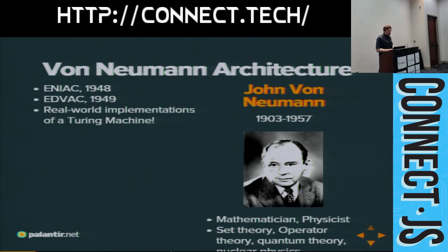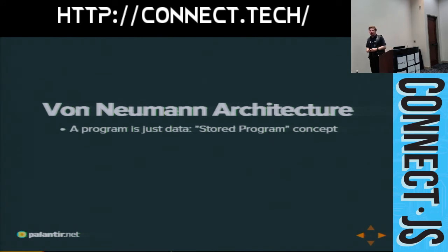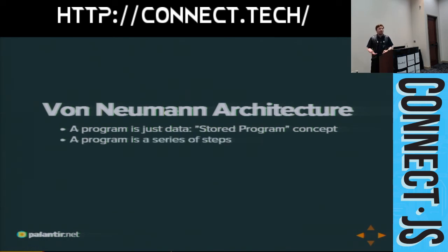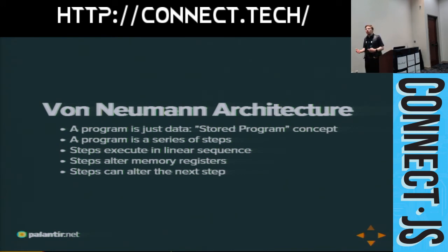But Von Neumann went a step further than programming by screwdriver. He was one of the people — the one who gets credited for it — who developed something called the Von Neumann architecture. The Von Neumann architecture is that you have a stored program: a program is just data. A program is data that you can manipulate, whose job is to manipulate other data. A program is simply a series of steps, a series of instructions followed one after another in linear sequence that are altering memory — altering state. One of the things those steps can alter is what the next step is going to be, and that's how you do branching, how you do conditionals. Every computer in the world today is this — every single computer you have ever touched, under the hood. Everything else on top is just abstraction and user experience.